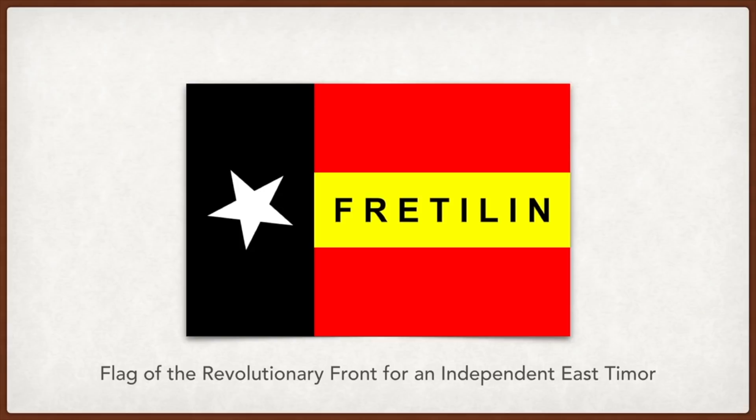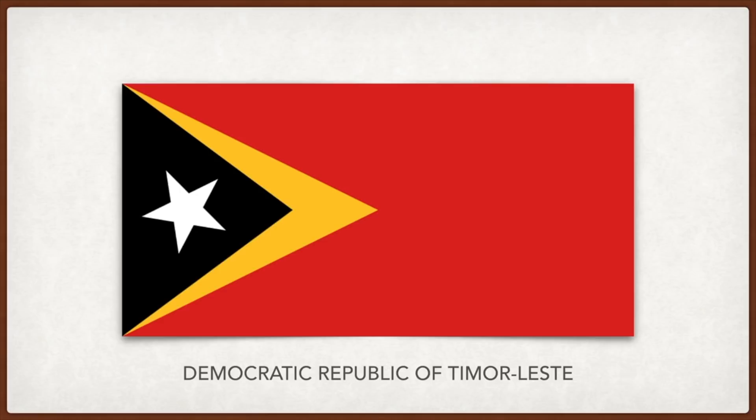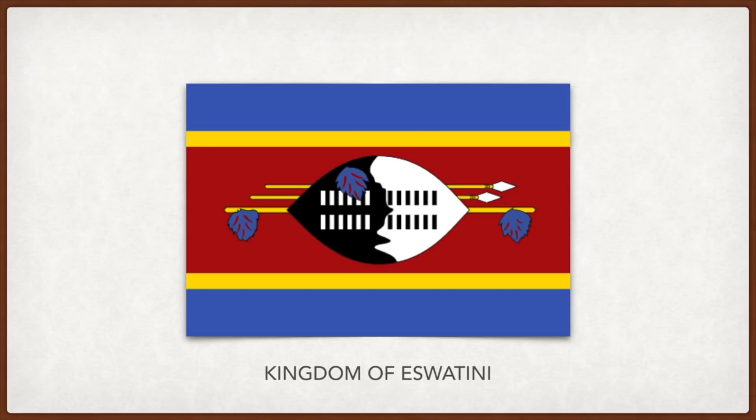Eswatini (Swaziland): a traditional Swazi shield adorns the center; two spears and a fighting stick with feathers are behind it. The crimson red stands for the battles of the past, the yellow for mineral wealth, and the blue for peace.